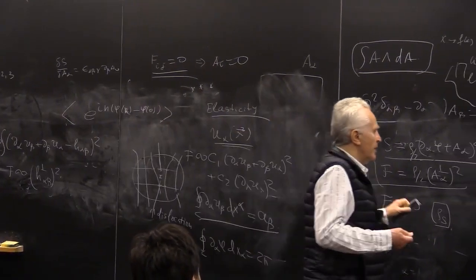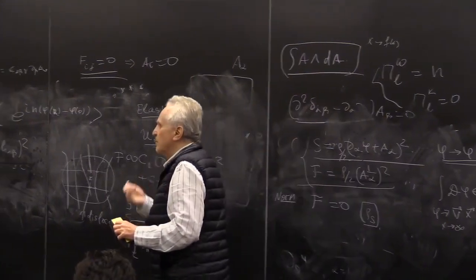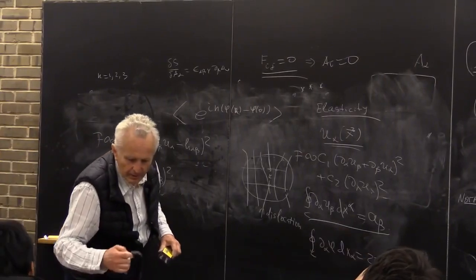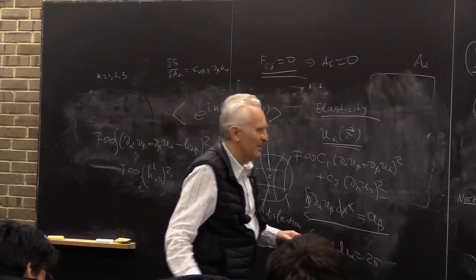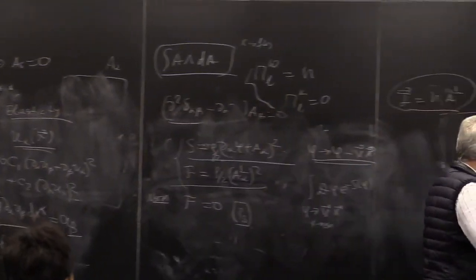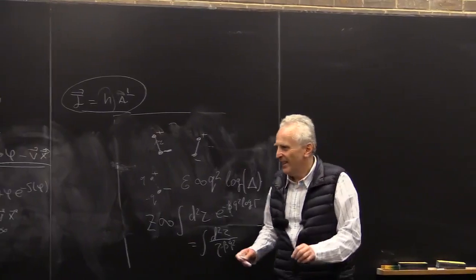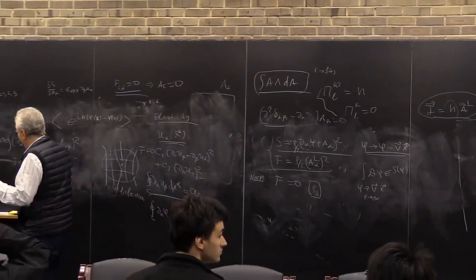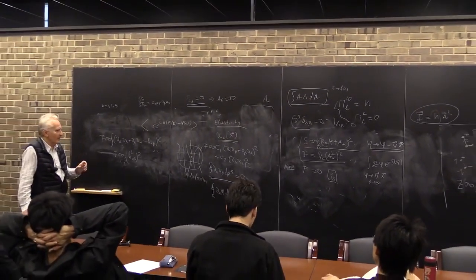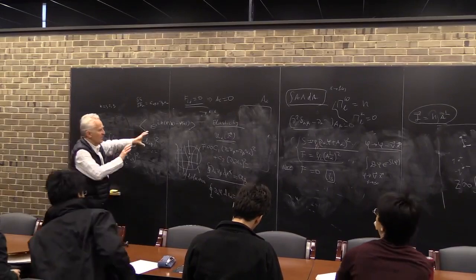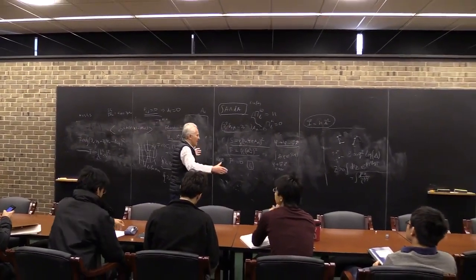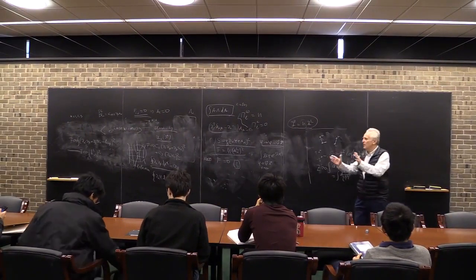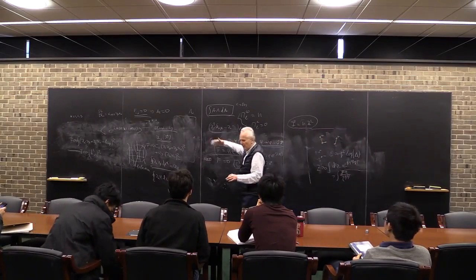People in elasticity theory often use general relativity to solve problems because those deformations with dislocations imitate the gravitational field. Our primary interest is in gauge theories. What fascinates me is that such completely different parts of physics are described by the same ideas — it seems the stock of good ideas is limited and nature uses them everywhere.